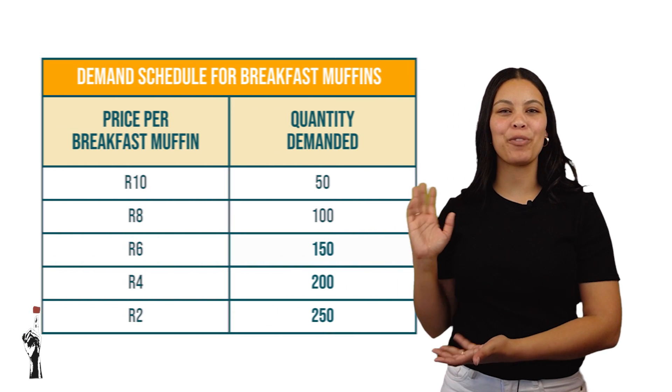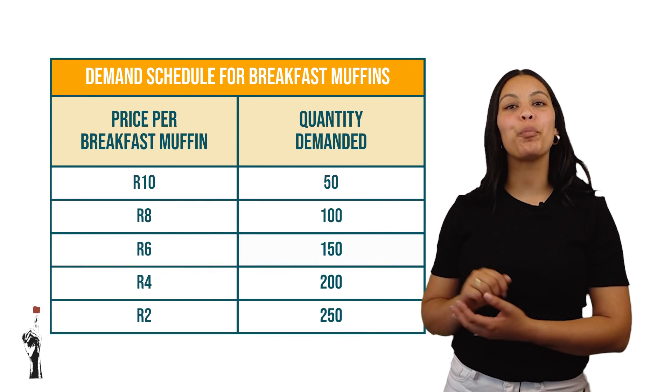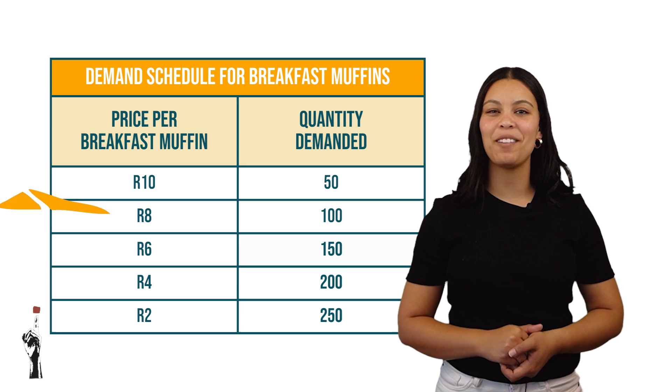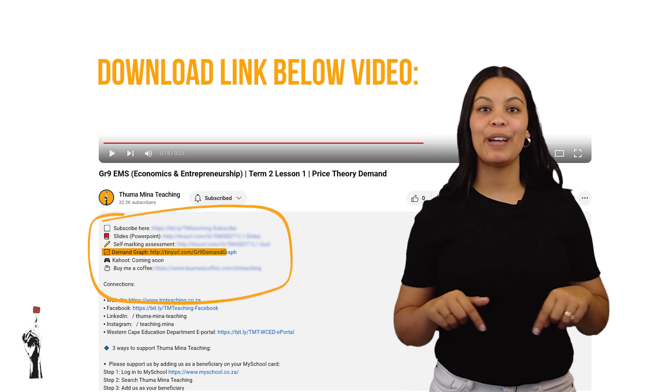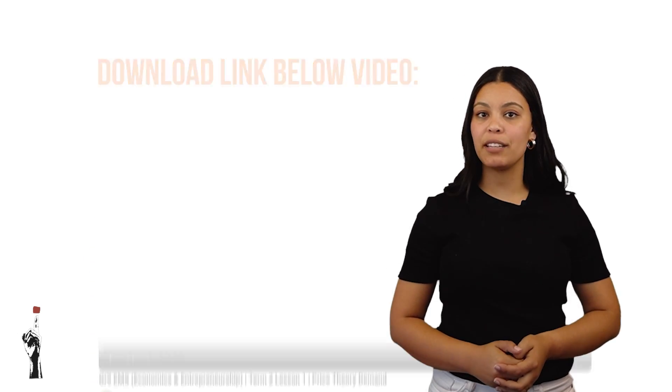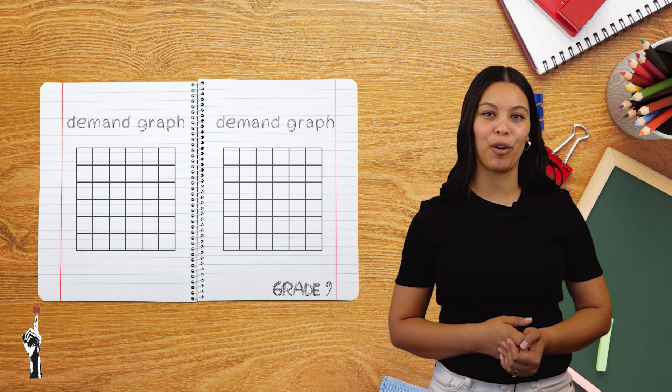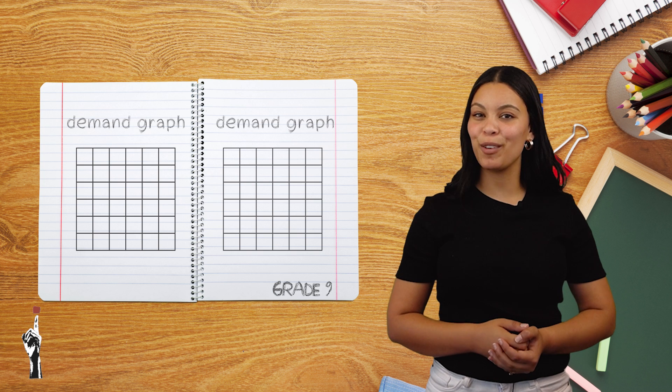Now it's your turn to practice drawing the demand curve. Here we have the demand schedule for breakfast muffins sold at IKC. Use the graph sheet in the comment section below. Alternatively, if you cannot access it, you can draw your own demand graph in your book. Let's pause this video so that you can complete the activity effectively.